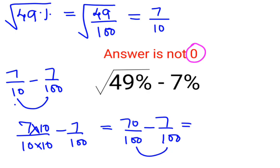So I can directly do the subtraction. And this comes out to be 63 upon 100, which can be written as 0.63 in decimals or in percentages, I can write it as 63%.